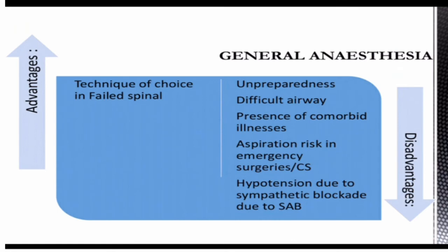General anesthesia is the technique of choice when spinal anesthesia has failed. The disadvantages of GA in this context include unpreparedness, difficult airway, presence of comorbid illnesses, aspiration risk in emergency surgeries and caesarean sections, and hypotension due to sympathetic blockade from the previous subarachnoid block.